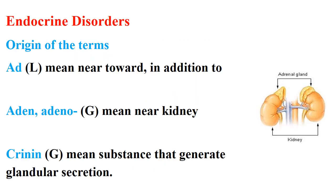Endocrine disorders — as we mentioned, these are disorders of the endocrine glands. The first origin of term is 'ad', which means near or in addition to.